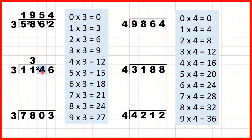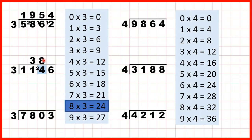Now onto our next digit, we have the remainder 2 in front of it, so we have 24 divided by 3. We need to look for a number in the 3 times table which is as close to 24 as possible, but not more than 24. Well 24 is in the 3 times table — that's exactly 8 times 3. So we have 8 in our answer line, and this time we don't have any remainder. We don't have anything to write here, because 24 is in the 3 times table, so we just go straight on to our next digit.